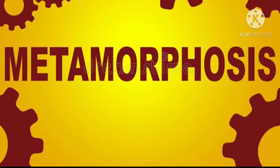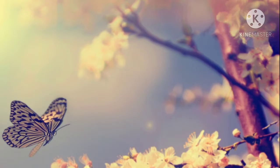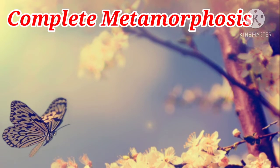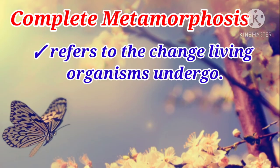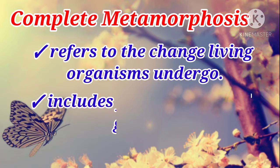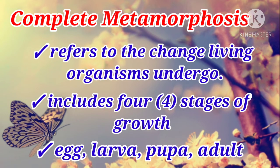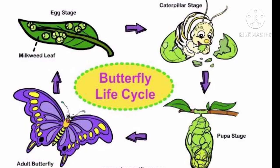There are two types of metamorphosis. One of them is the complete metamorphosis. It refers to the change living organisms undergo, and it includes four recognizable stages of growth: namely the egg, the larva, the pupa, and adulthood. Let us take a look at some animals with life cycles in four stages. The first one is the life cycle of a butterfly.